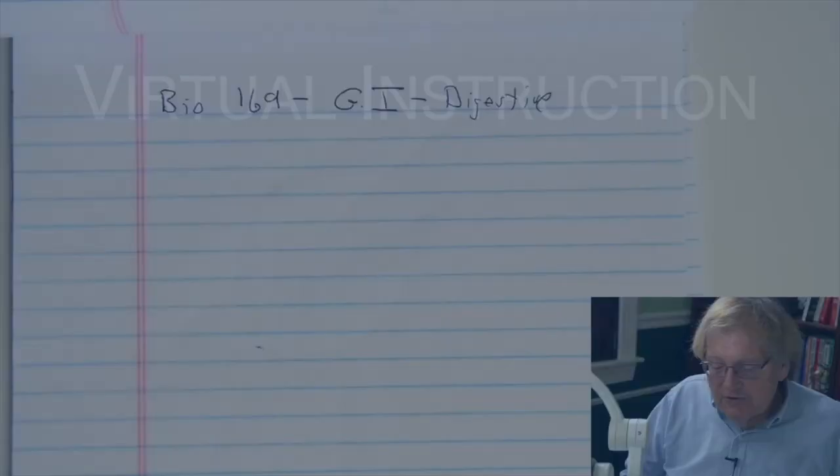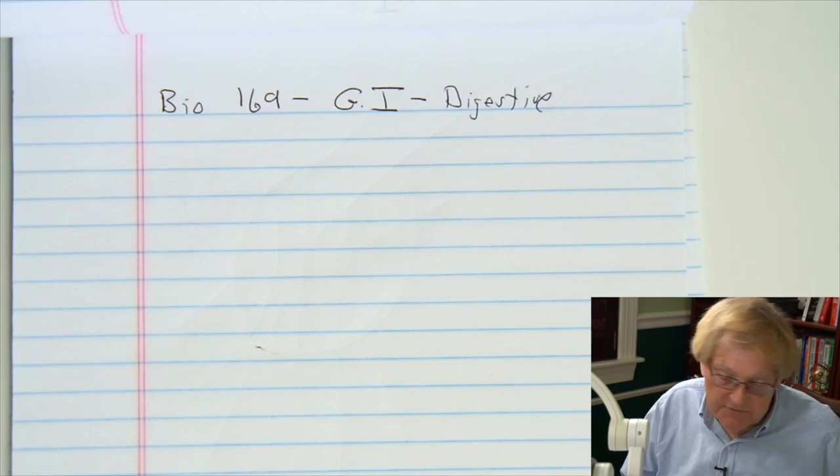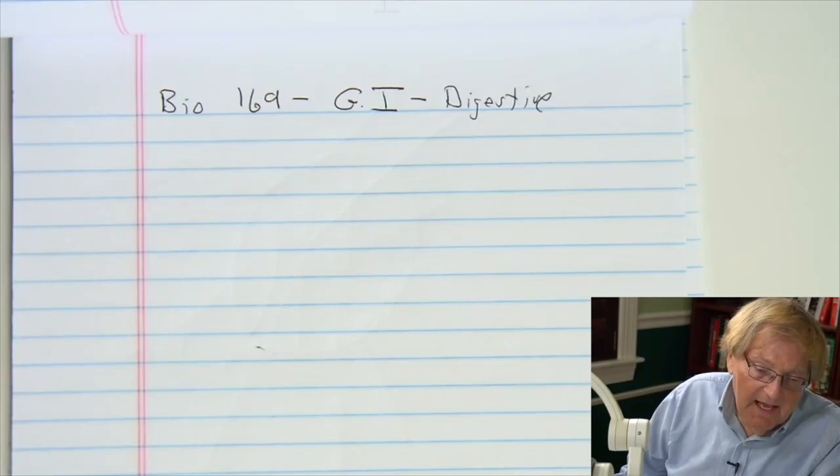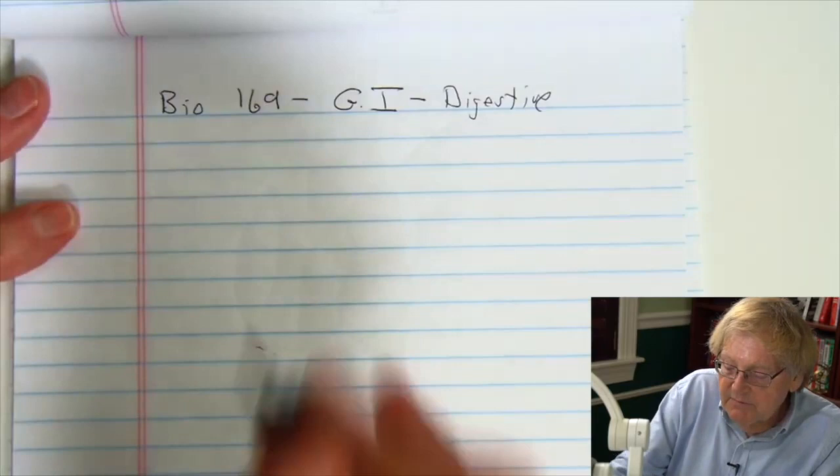Now we're talking about Bio 169. Remember the third exam is on the gastrointestinal system, also called the digestive system, and also the reproductive system. I'm just going to give you a quick overview of the digestive system or GI system. Remember that's going to all be covered in chapter 15, so make sure you carefully go through the textbook and the end of chapter questions. I'll be sending you probably an old exam and review sheet.